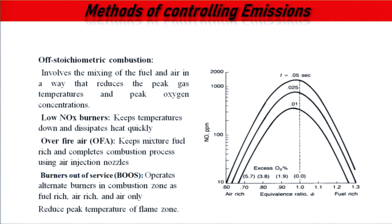Methods of controlling emissions include controlling the equivalence ratio. Low NOx burners keep temperature down and dissipate heat quickly. Over-fire air keeps the mixture fuel-rich and completes combustion using air injection nozzles. Burners-out-of-service technique operates alternate burners as fuel-rich, air-rich, and air-only zones. The aim of all these modifications is to reduce the peak flame temperature — if peak temperature is reduced, NOx emissions are reduced.